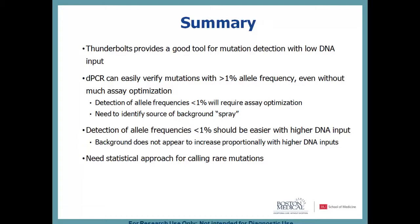In summary: Thunderbolts is a great tool for mutation detection with low DNA input, and we intend to keep using it. Digital PCR can easily verify mutations with 1% allele frequency or greater even with minimal optimization. Detection of allele frequencies lower than that will require optimization — specifically identifying and overcoming the source of background spray. We also believe detection of lower allele frequencies will improve with more input DNA. The field needs a statistical approach for calling rare mutations; we can't just be asking the audience whether a result looks real.